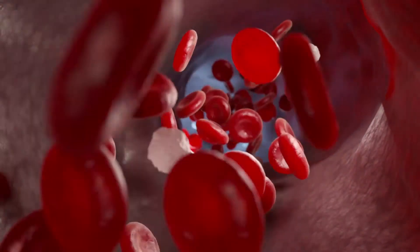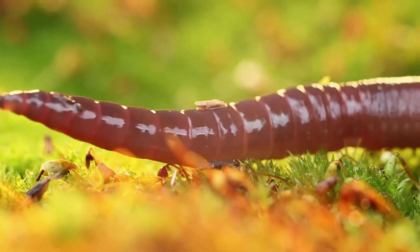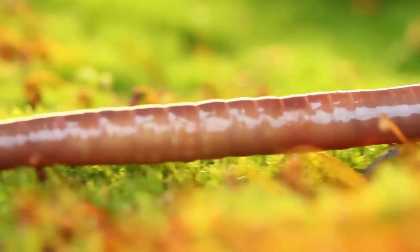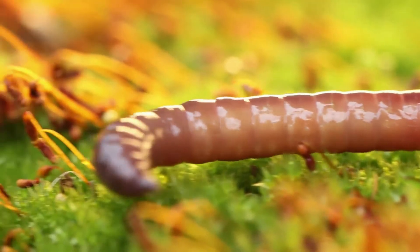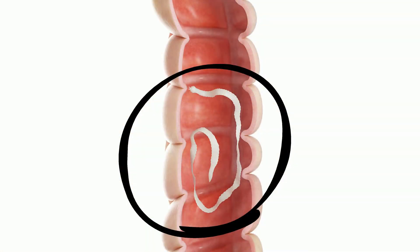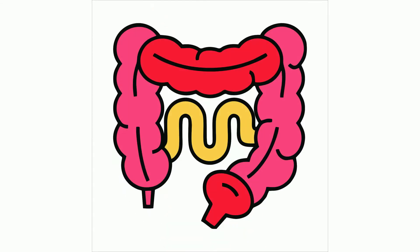Many worms are parasites. A very common example is a tapeworm. They live inside the intestines of an animal and will eat a portion of the food of the host. The tapeworms may lead to serious complications, including blocking the intestine. Now that sounds painful.